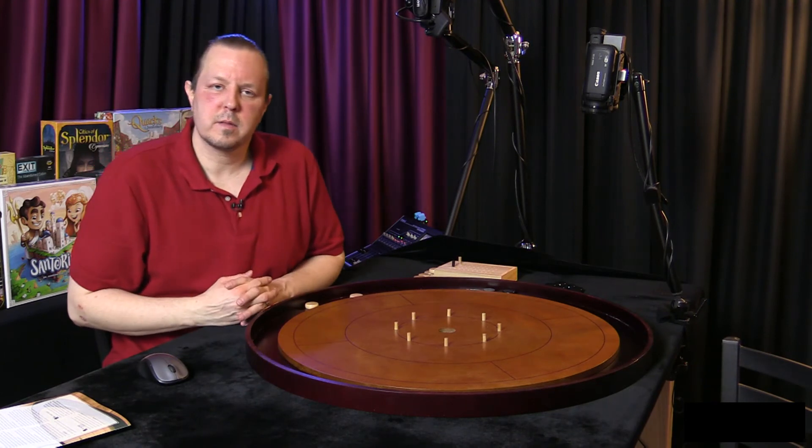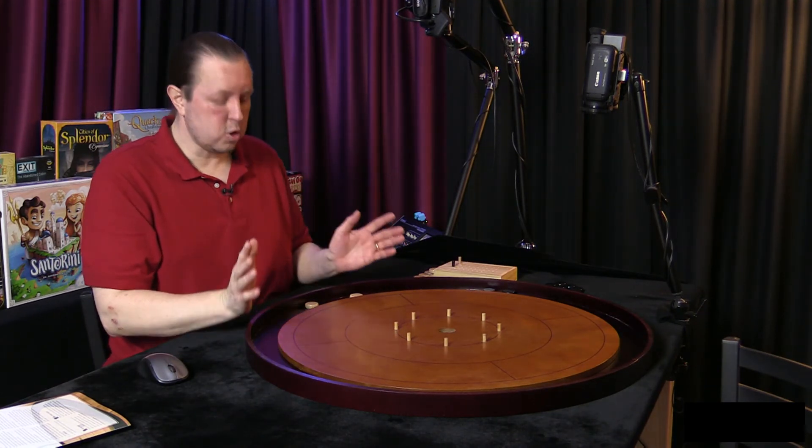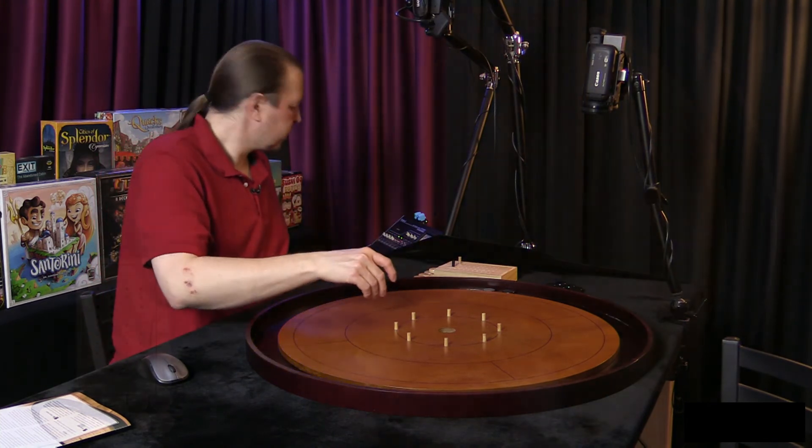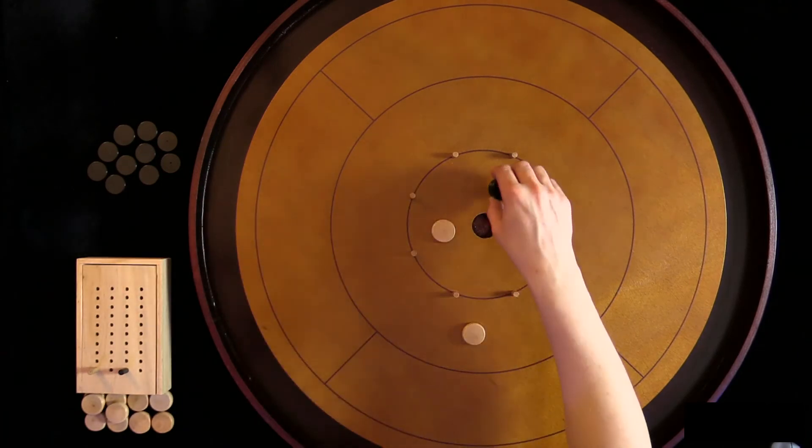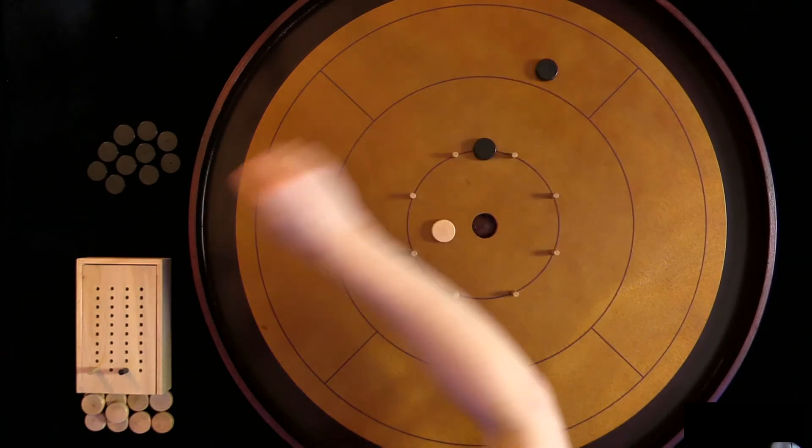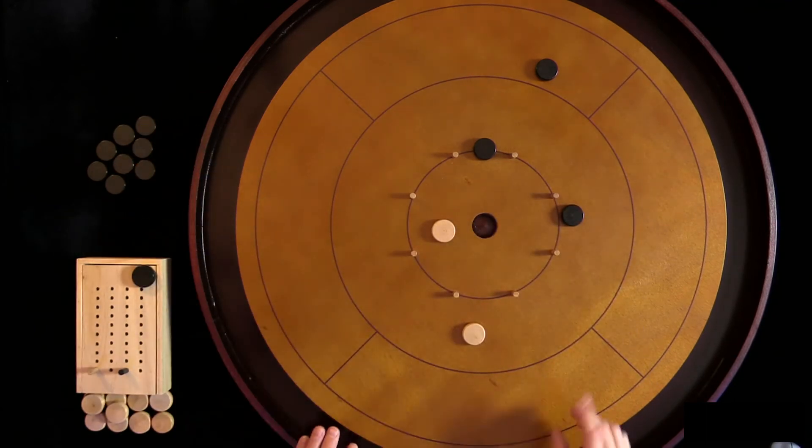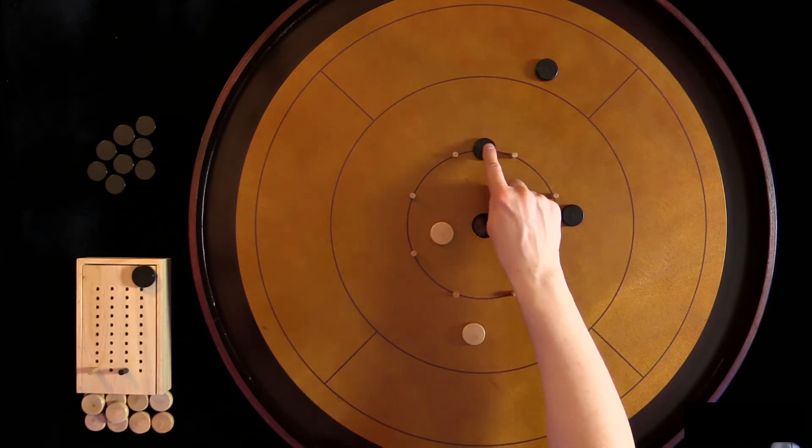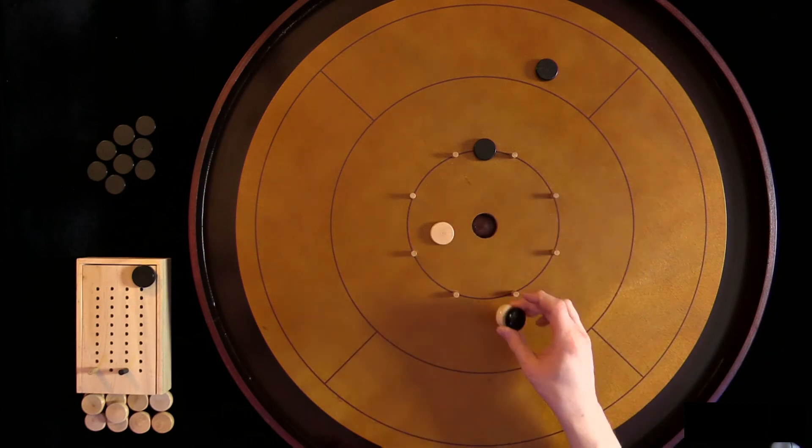So the game, players take turns and then after they shot all 12 discs you see how scoring works. So let's say it was like this at the end. So I have 15 points here. Julie has 10 because it's on the line and this one's 10, so this is also 10, so I remove these two.